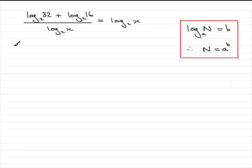So we'll start by doing that, and therefore what we have is, if we multiply this side by log₂(x), we're just going to be left with the top part of this fraction. So let's write that down: log₂(32) + log₂(16) equals log₂(x) times another log₂(x). So in other words, I've got this term squared.